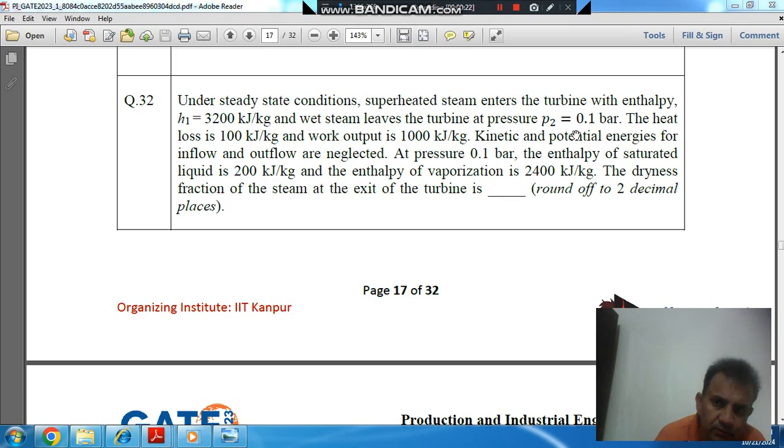the turbine at pressure p2 equal to 0.1 bar. The heat loss is 100 kilojoules per kilogram and work output is 1000 kilojoules per kilogram. Kinetic and potential energies of inflow and outflow are neglected.